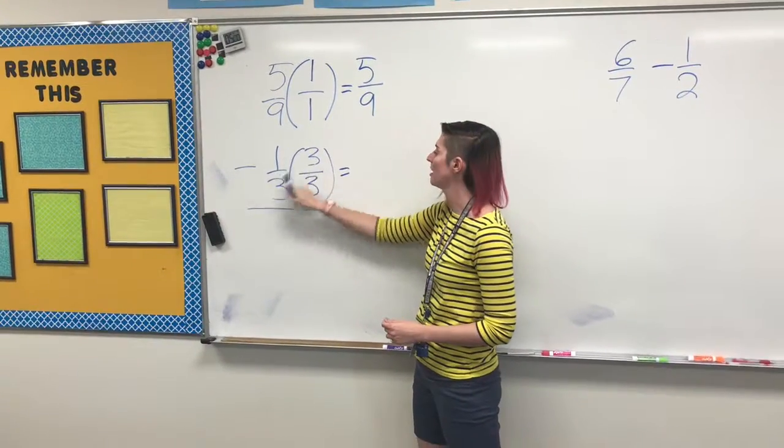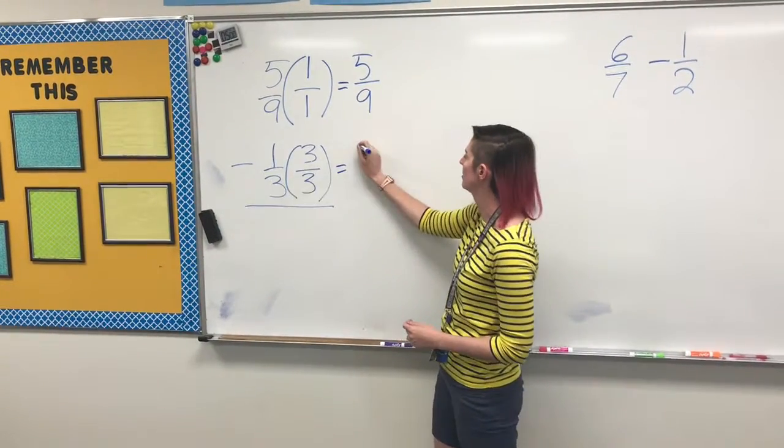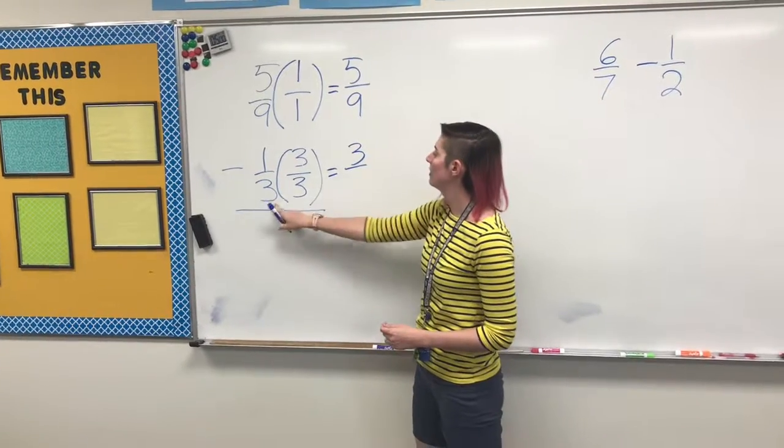And again, top times top, bottom times bottom. 1 times 3 is 3, and 3 times 3 is 9.